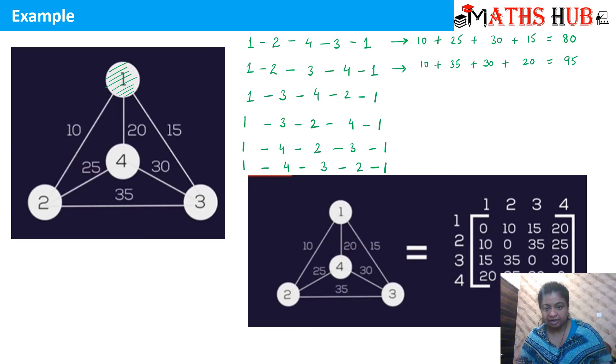Now let us find out the distance for the third path. 1 to 3 is 15. 3 to 4 is 30. 4 to 2 is 25. 2 to 1 is 10. So 25 plus 15 is 40. 40 plus 30 is 70. 70 plus 10 is 80.